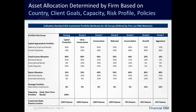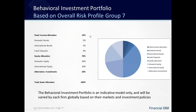For group one, essentially all of the money or portfolio can be invested in cash or short-term bonds, as it's meant to be for one hundred percent capital protection. These are the financial reserves required to meet the needs of day-to-day life. A younger person with a good secure job doesn't need as much in group one, whereas older people would need more — we'll talk about that shortly. As shown on the pie chart here, group seven has much less allocated to fixed income and a lot more to equities and alternative investments. This is an indicative model only and will be adjusted for each firm globally based on their markets and investment policies.